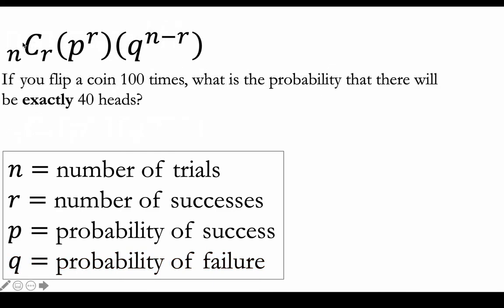So we'll go through this problem right now. Imagine you flip a coin 100 times. What is the probability that there will be exactly 40 heads? Now if you see this phrase, exactly 40 heads, that's when you're going to be using the binomial pdf function.